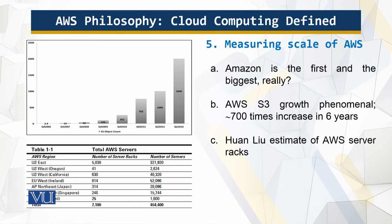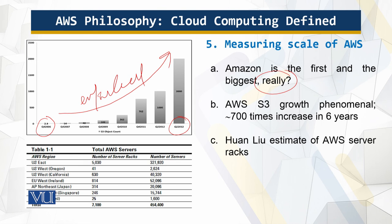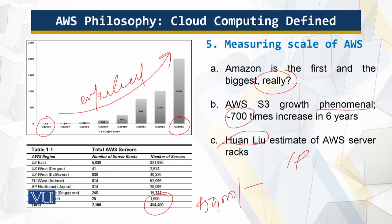Amazon is the first and biggest cloud provider. There has been an exponential growth — a 700 times increase in S3. Scientist Huan Liu estimated the number of Amazon servers based on IP addresses at about 450,000. We can safely say that public cloud and Amazon cloud go interchangeably — Amazon is the pioneer. That is all for this module, thank you very much.